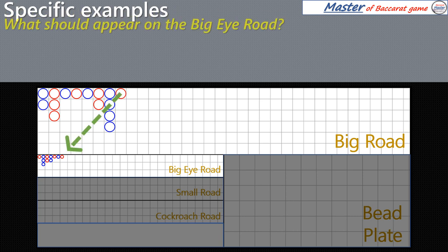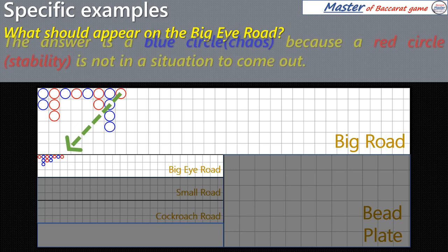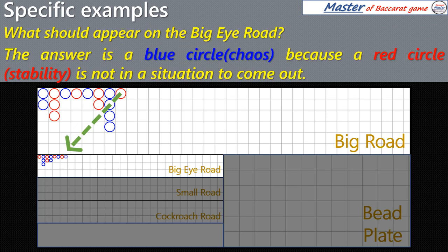What should appear on the Big Eye Road? The answer is a blue circle, because a red circle is not in a situation to come out.